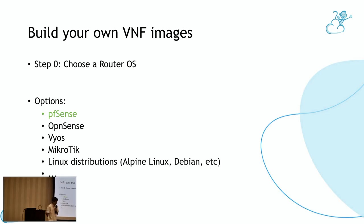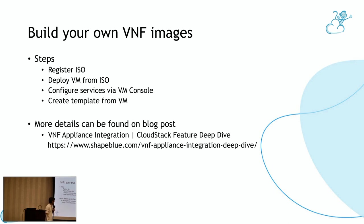If we do not get the VNF image from vendors, we can build our own. As a first step, we choose the root OS — options include PFSense, OPNsense, MikroTik, or even some Linux distributions as a VNF image. The steps are: register the ISO, deploy a VM, configure services in the VM, create a template from the VM, and then the template is ready for VNF appliance deployment. I have written a blog post explaining how to create a VNF image from a PFSense ISO step by step.